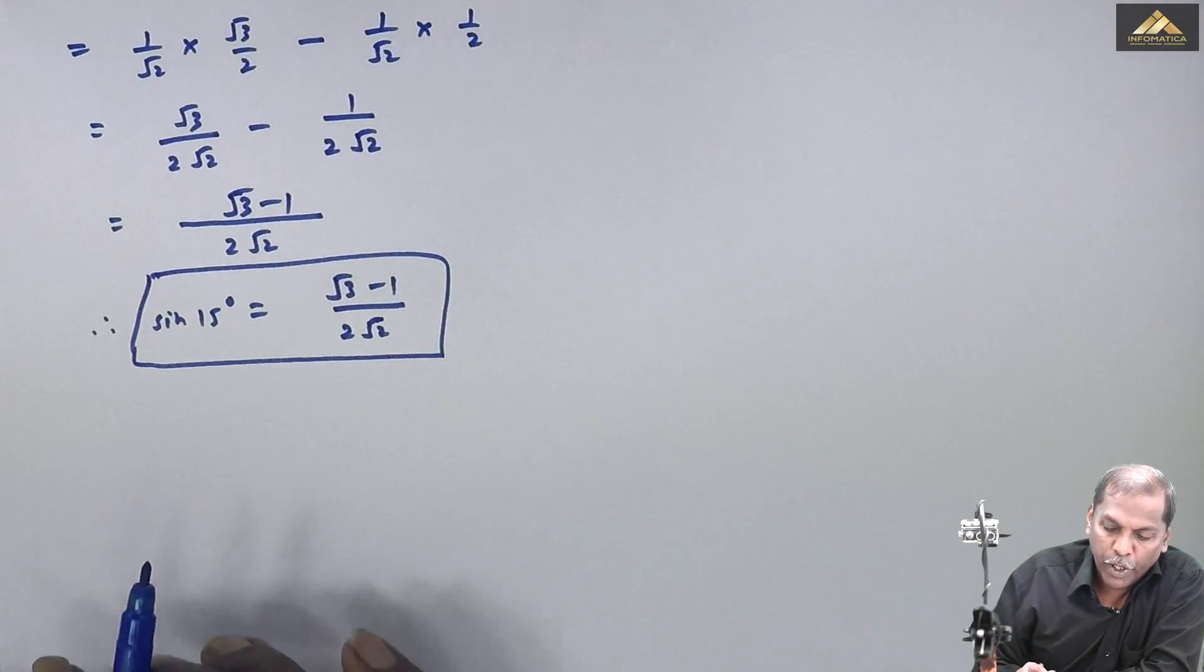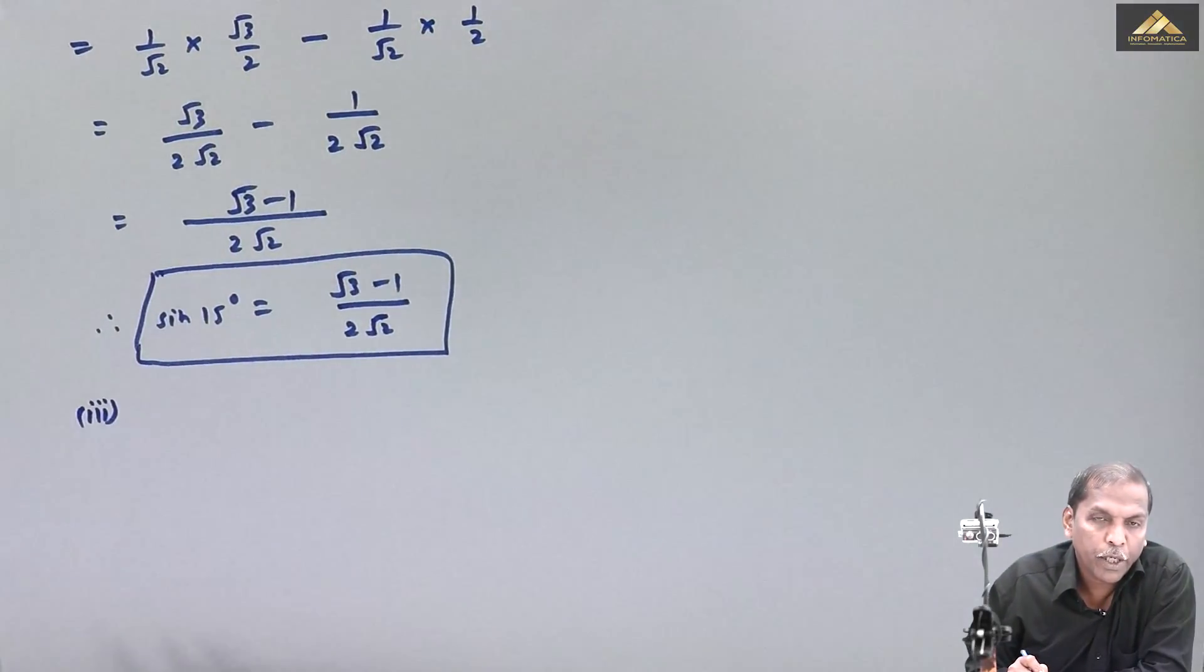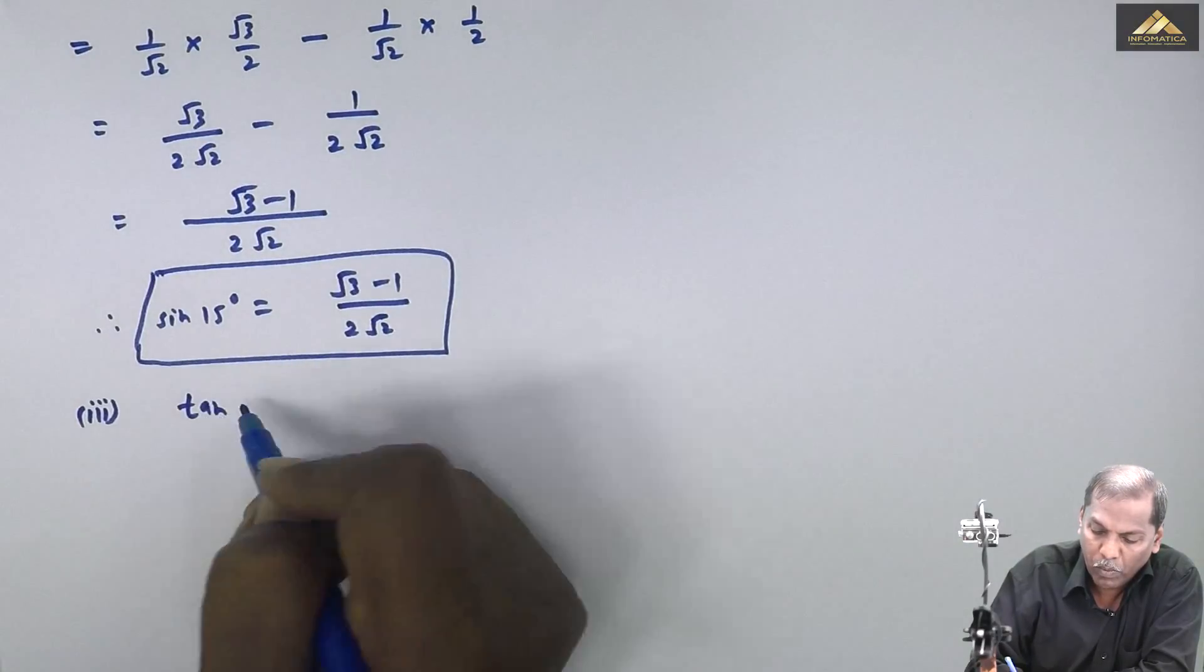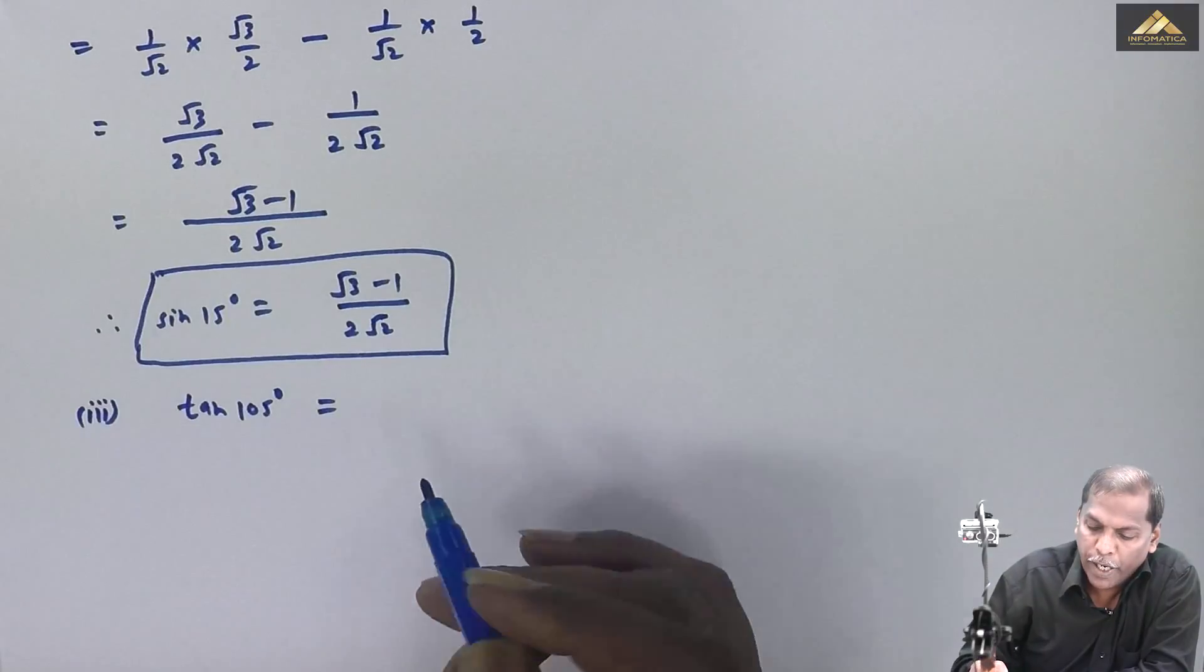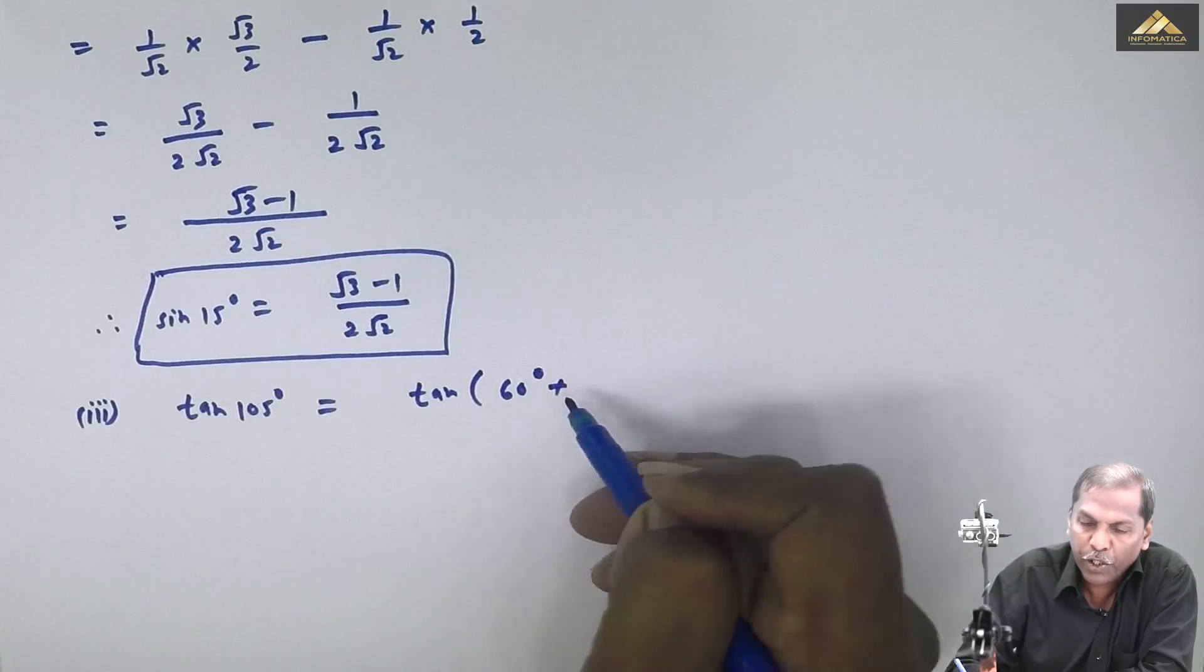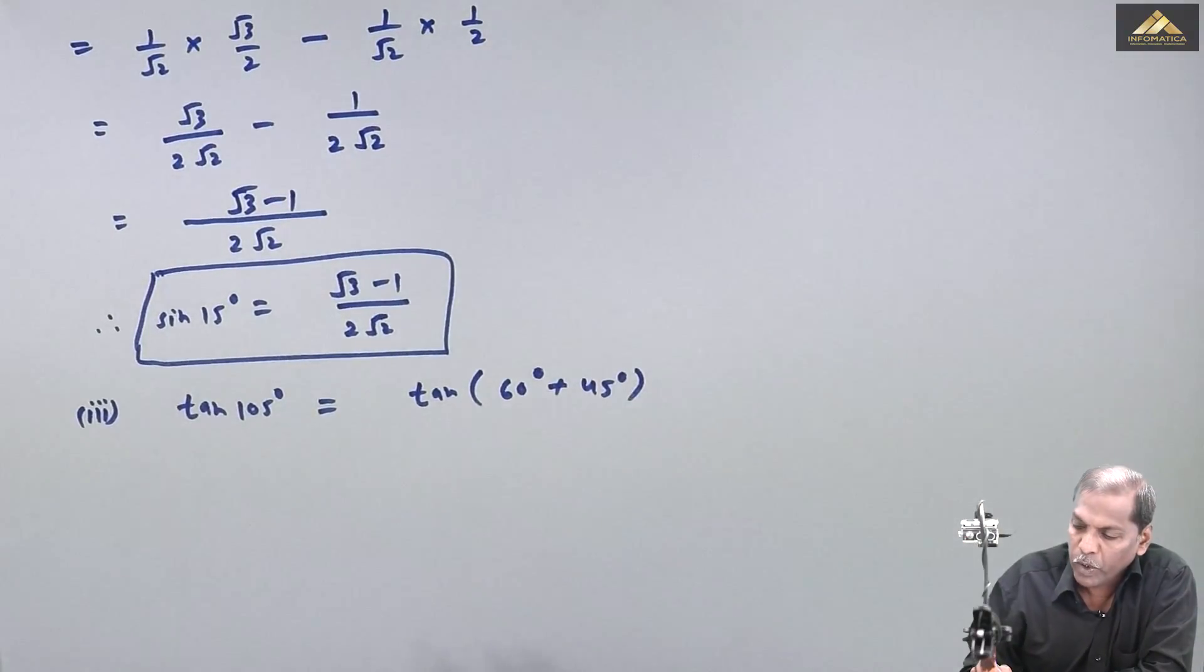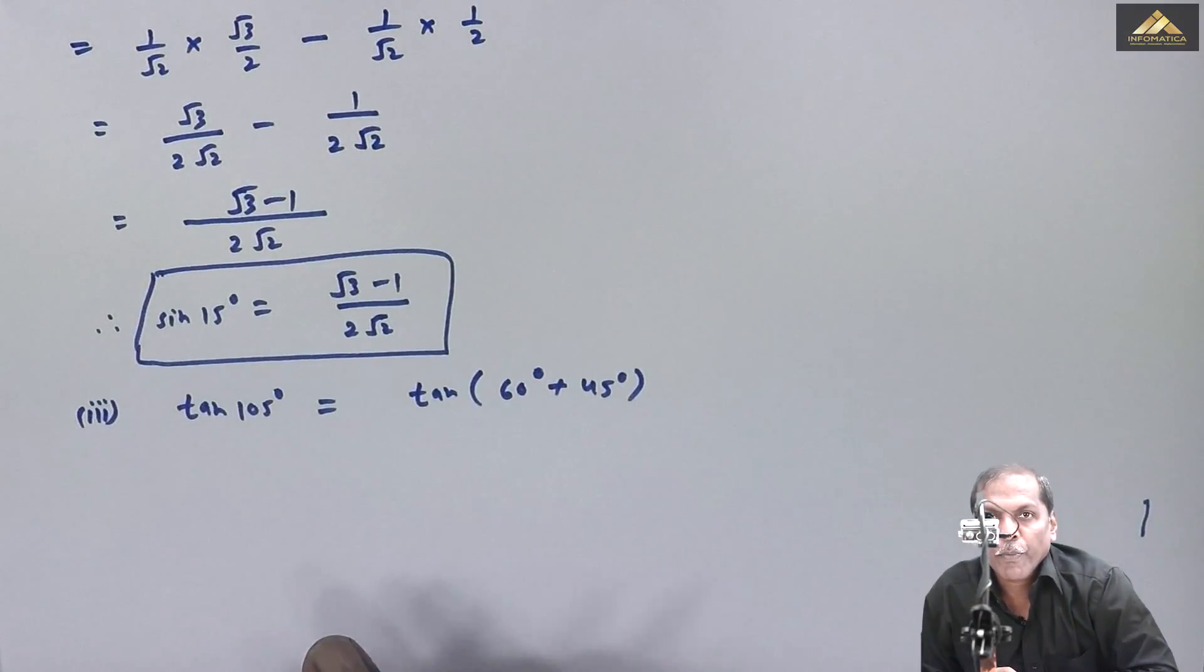Now let's go through question number 3. Question number 3 is tan of 105 degree. Now tan of 105, 105 can be written as 60 degree plus 45 degree. Observe here, we have the formula tan of (a plus b).